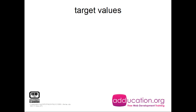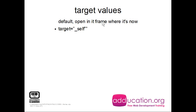So what kind of values do we have? We have the default value, and it opens in the frame where it currently is — in its own frame. That's the default, which is basically target equals underscore self. Its own frame is itself, so I can leave this one away and it will open in its own frame.